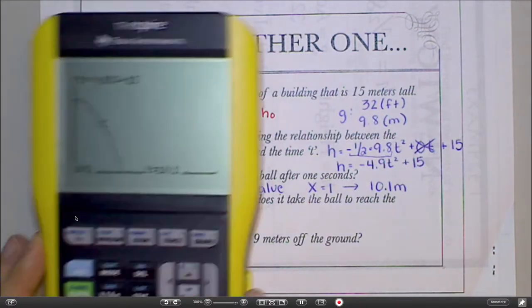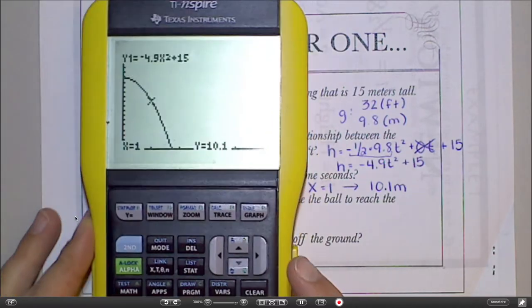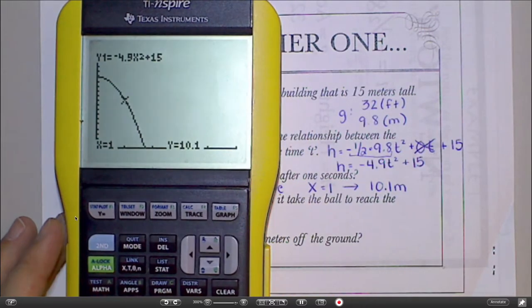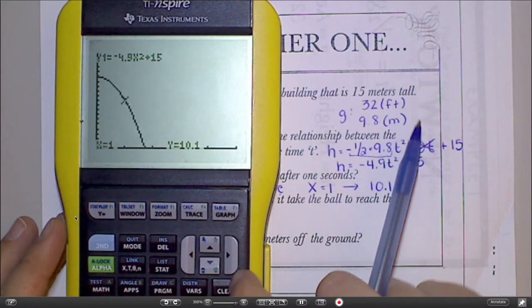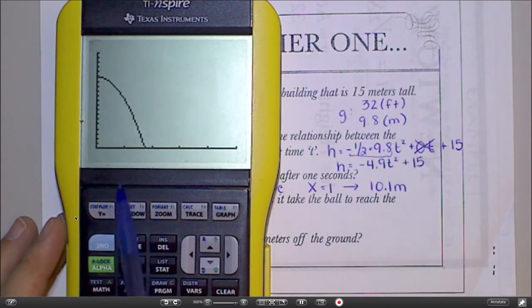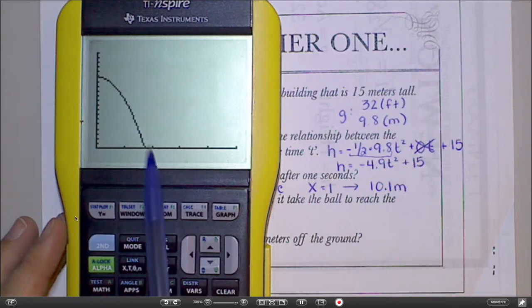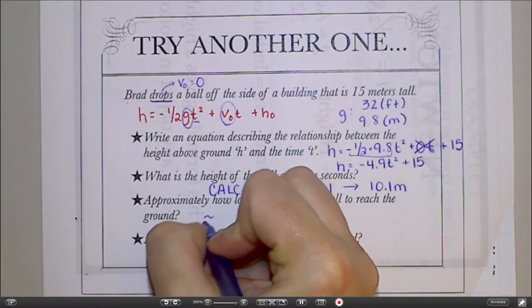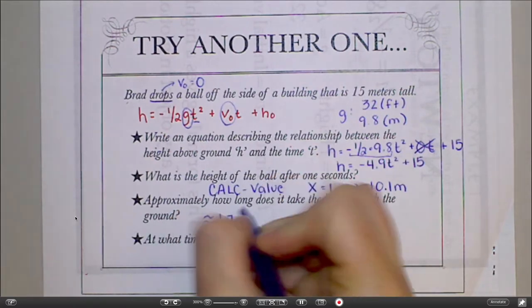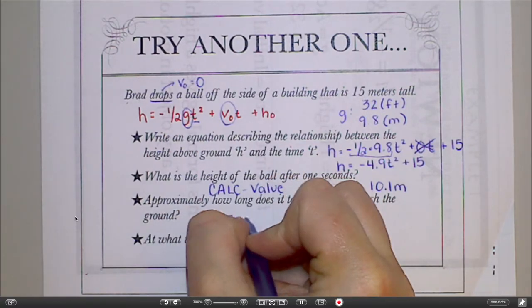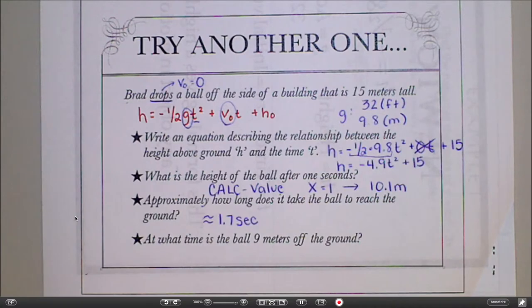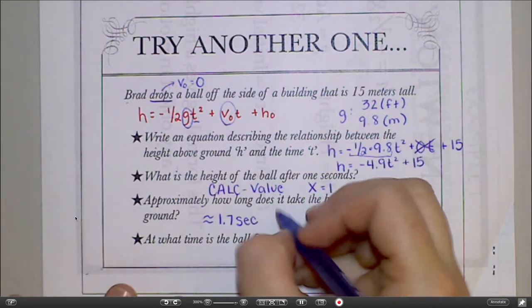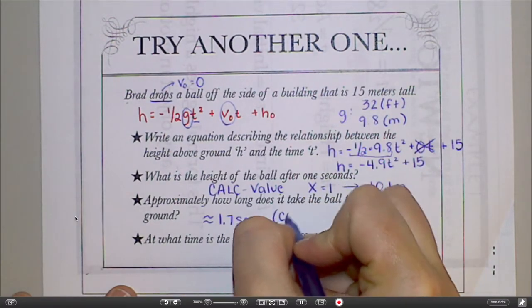Okay, so approximately how long does it take the ball to reach the ground? Well, hit clear to get the numbers off the bottom of your screen. These little dots down here are your seconds. So it's not even quite two seconds. You could say like about 1.7 seconds. Okay, about 1.7 seconds. And again, to do that, I just counted the dots at the bottom.